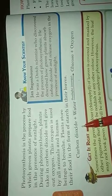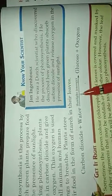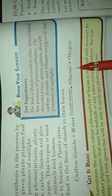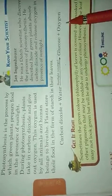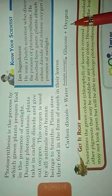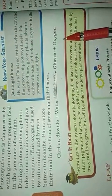In this process, carbon dioxide (CO2) and water (H2O), using energy from sunlight, produce glucose and oxygen. So plants also purify the air by releasing oxygen. Thank you, students.